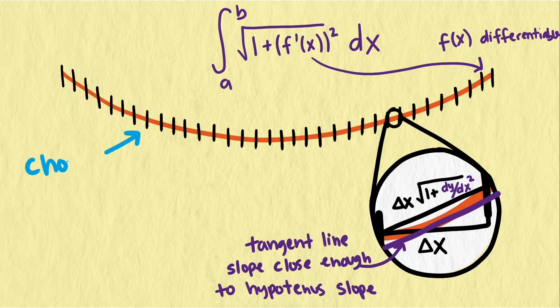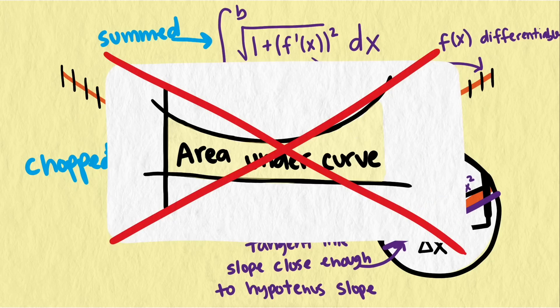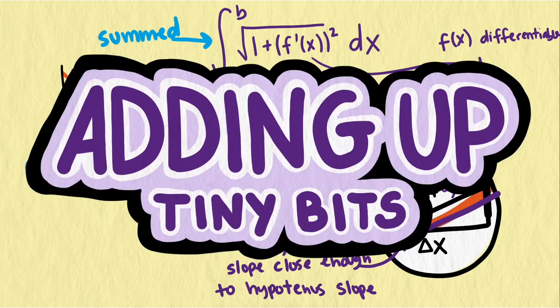The thinking we've done here to develop the arc length formula is very different from the other two common conceptions of integration. We didn't use antiderivatives to understand the problem, and we didn't reason with any areas under a curve. This is one of the many applications for why the adding up tiny bits conception is important and powerful.